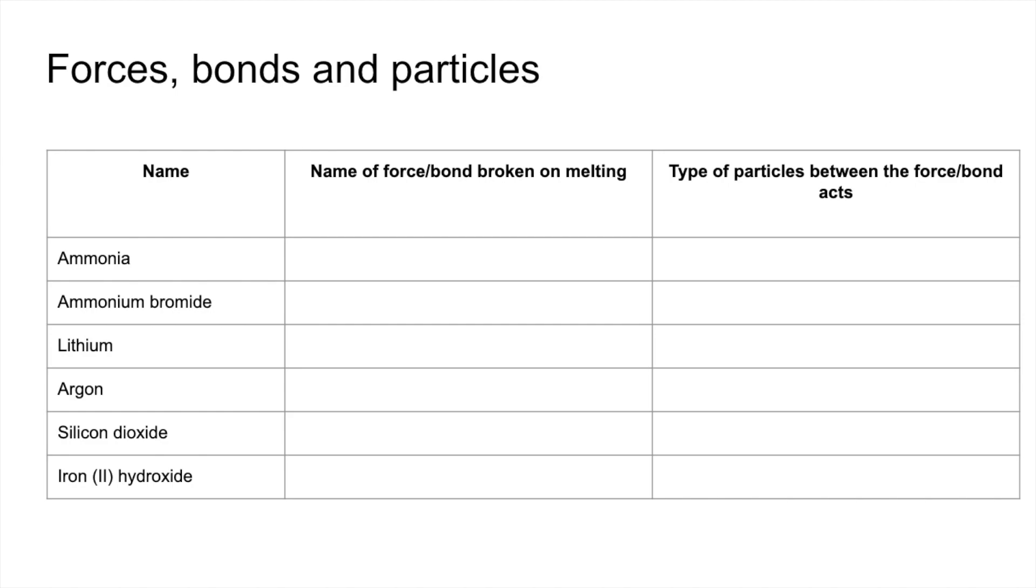So in ammonia, because you've got a hydrogen directly bonded to a nitrogen, it's got hydrogen bonds between its molecules and so that's what needs to be broken when you melt it. Ammonium bromide is ionic, and so it's the ionic bond that needs to be broken. Lithium has that metallic structure, so it's the metallic bond.